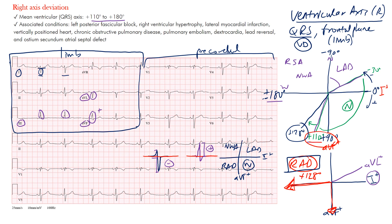There are a number of conditions associated with right axis deviation, including left posterior fascicular block, right ventricular hypertrophy (the right ventricle is bigger, so more rightward impulses), lateral MI, vertically positioned heart, COPD, pulmonary embolism causing backward pressure on the right side, dextrocardia, lead reversal, and ostium secundum atrial septal defect. The main thing is to be able to determine the axis and recognize when it is shifted rightward — that's right axis deviation.